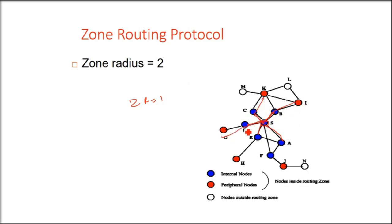When we take zone radius 2, then we will take two hops. All these nodes from S which are at a distance of two hops. This is the first hop where Z equals 1, and these reds will be included for Z equals 2. One hop are internal nodes, and red ones are two hops. These are called peripheral nodes.